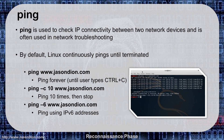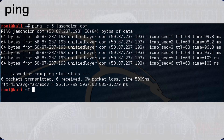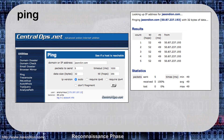Next we talk about ping, used to check IP connectivity between two network devices. On Linux, ping runs until terminated; on Windows it only does a count of four. We can ping a domain name or an IP address to find out if the distant end is up. We use this in a ping sweep — pinging an entire range of networks to find out who is up and who is down. Here, pinging jasondion.com for a count of six, it responded with 64 bytes each time, returning the IP address and a time of about 99 milliseconds. We can do this from centralops.net as well for arm's-length reconnaissance.